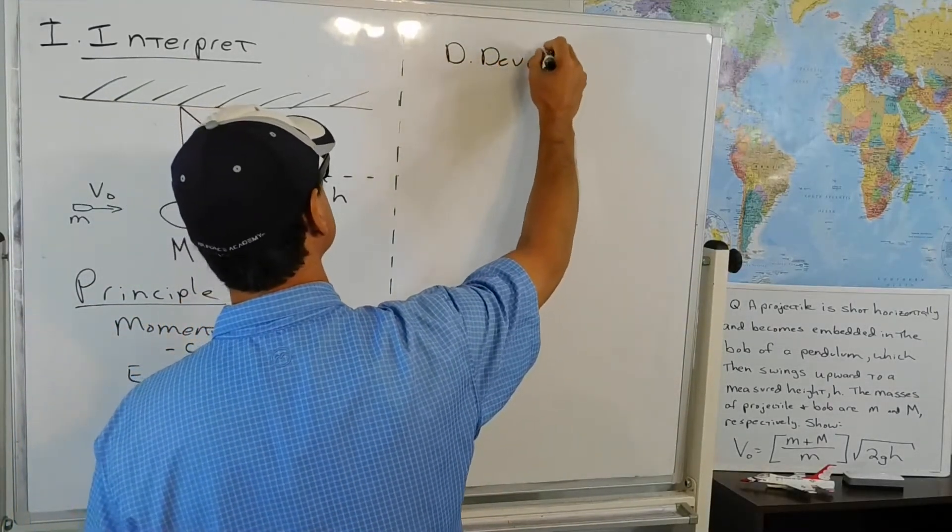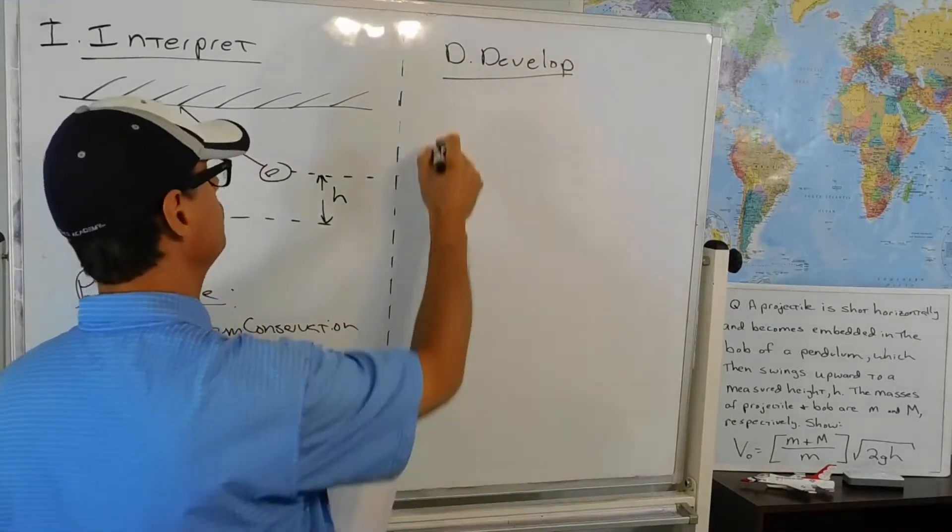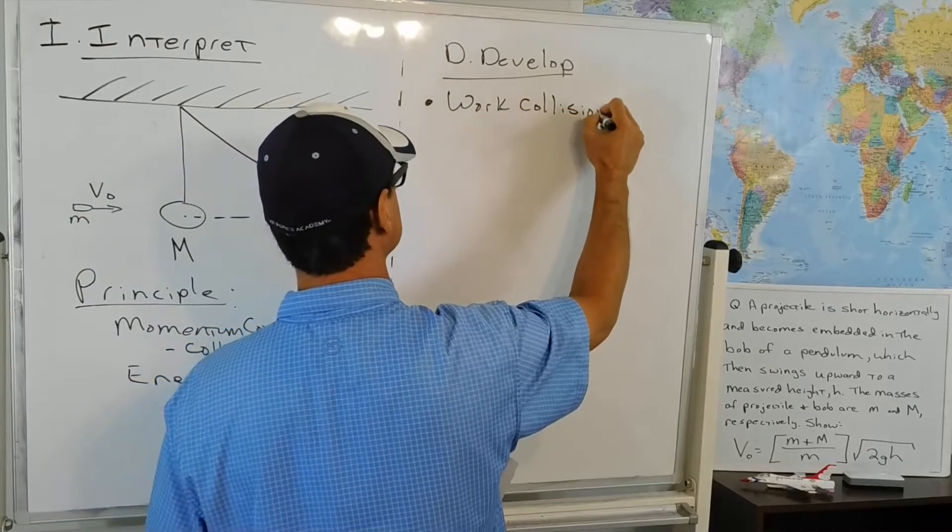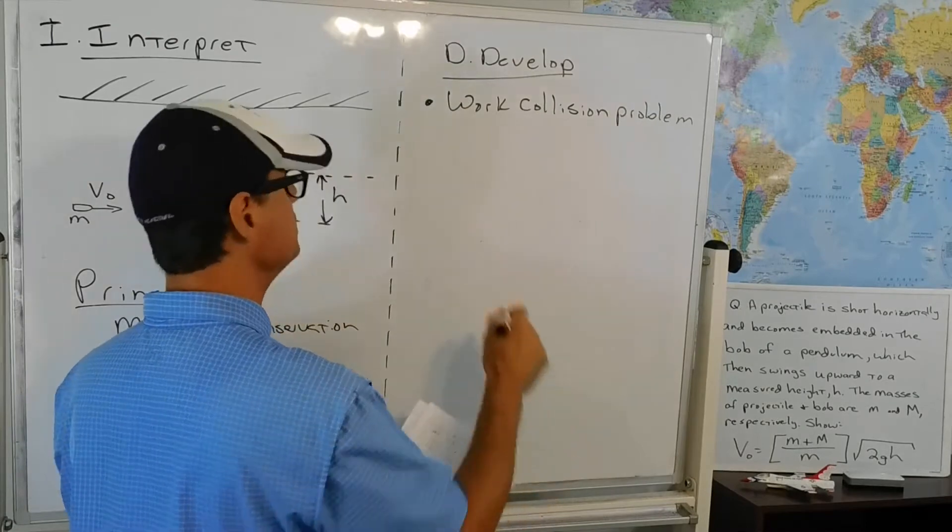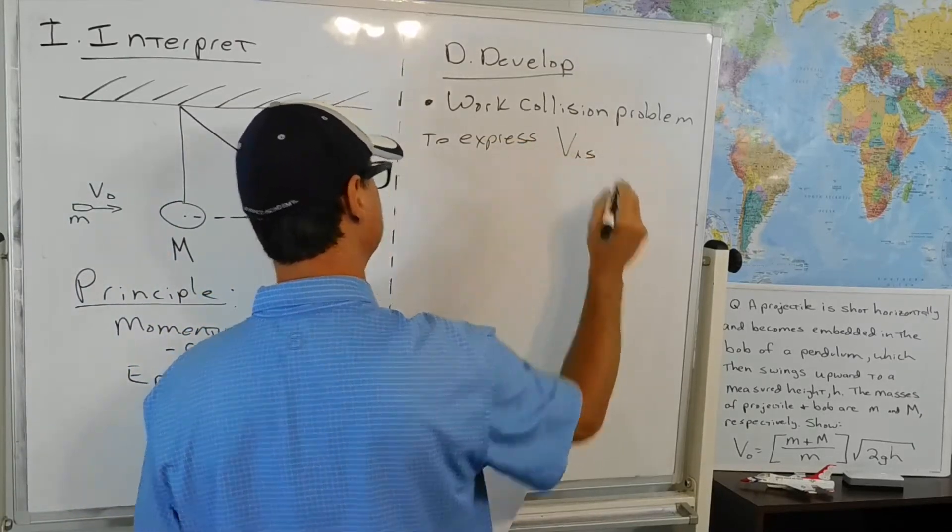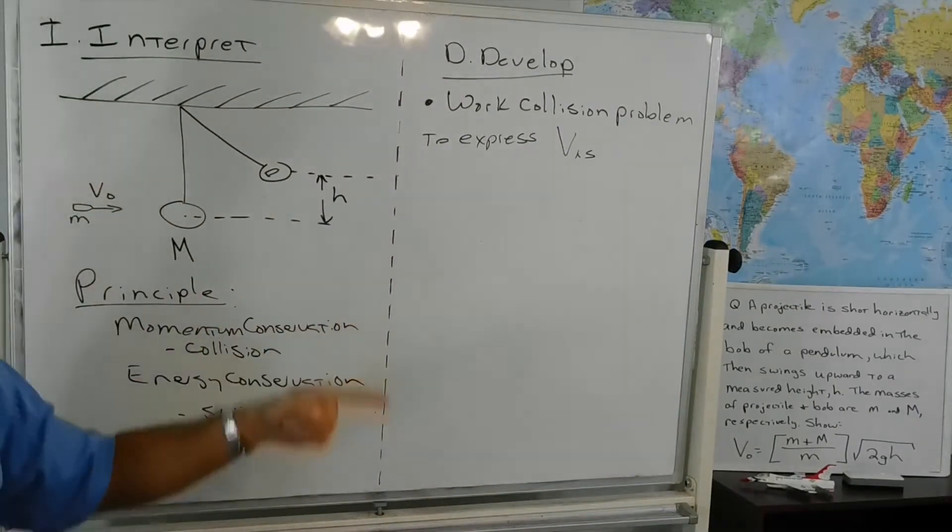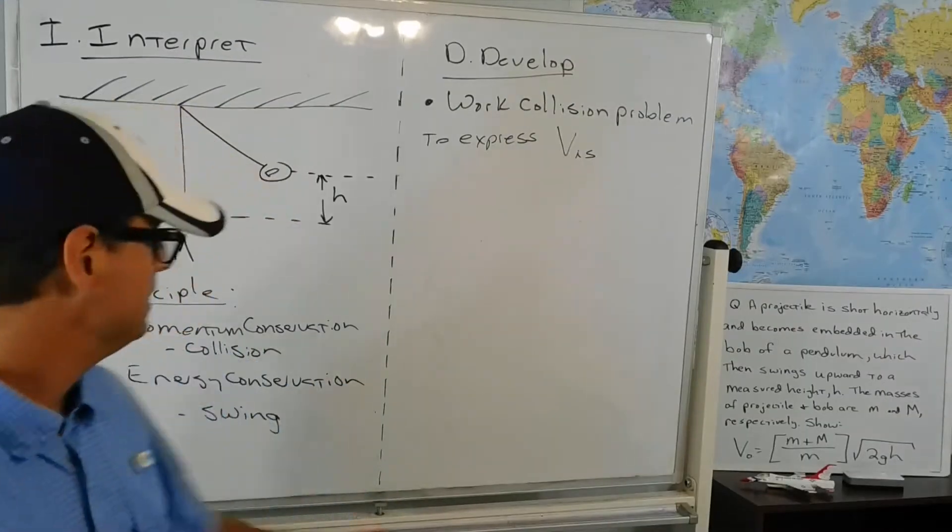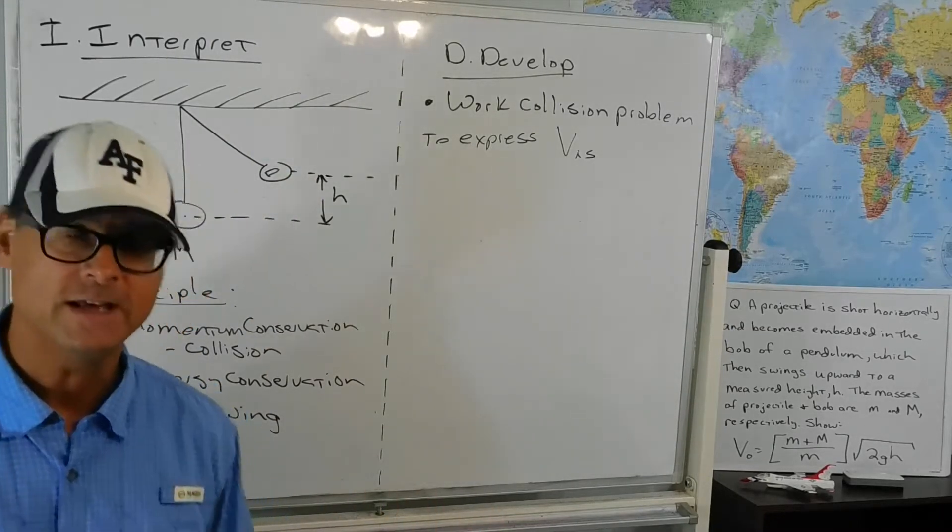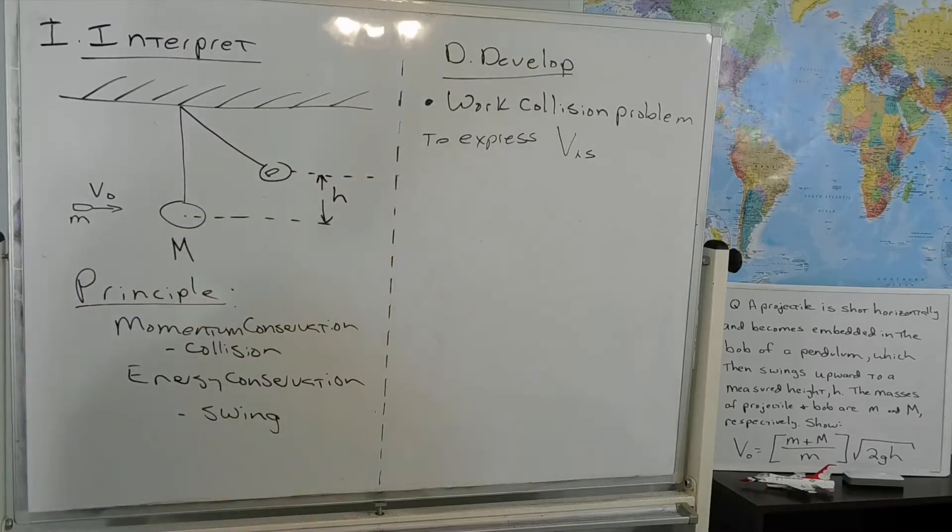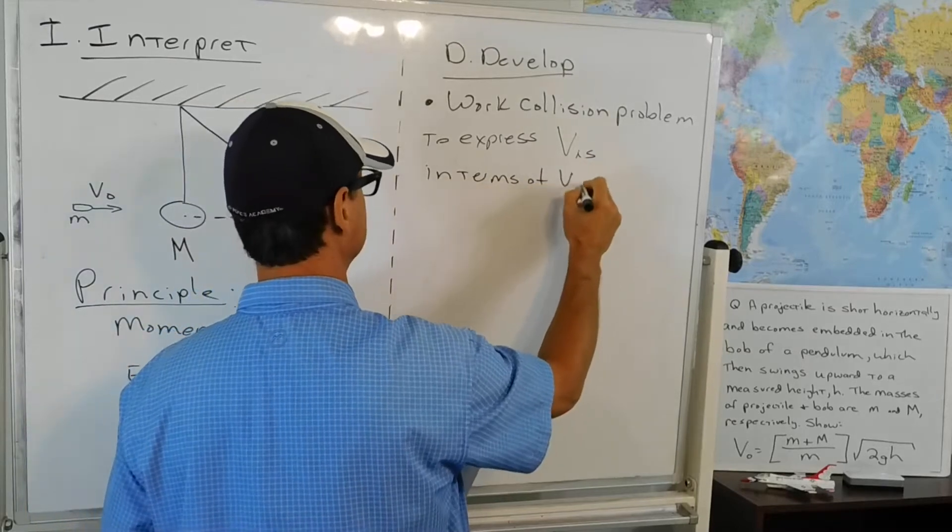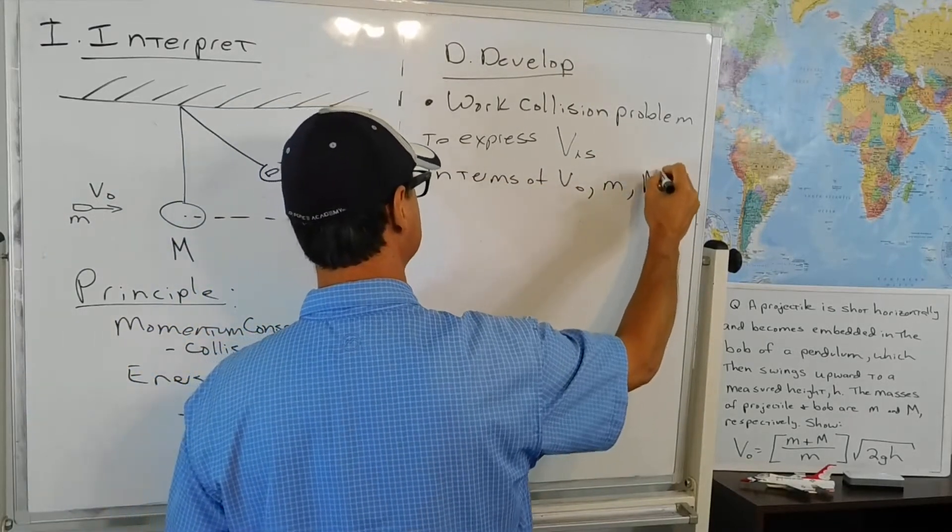To develop our bullet point plan, the first thing that we're going to do is we're going to work the collision problem. And what our goal here is, is we're going to express the initial for the swing. Let's be careful here. We've got V naught, which is the initial velocity of the bullet or the other projectile. The initial for the swing is after the projectile embeds in the bob and starts to swing upward. But before it's really gotten very far, when it's still really at that initial height of zero, we're going to give it that V initial swing. And so we're going to try and express this V initial for the swing in terms of V naught, the mass of the projectile, and the mass of the bob.